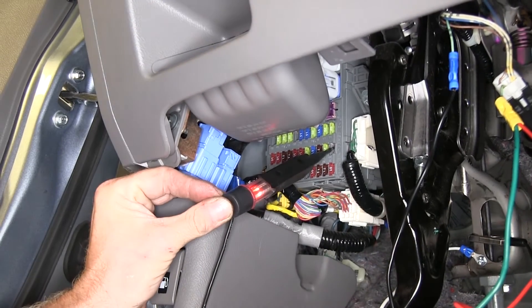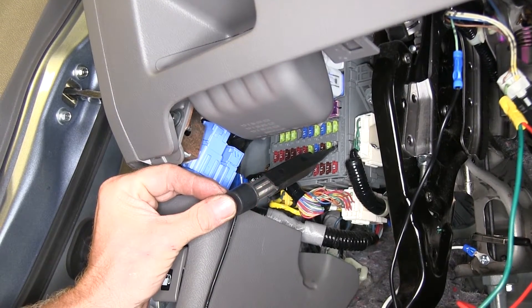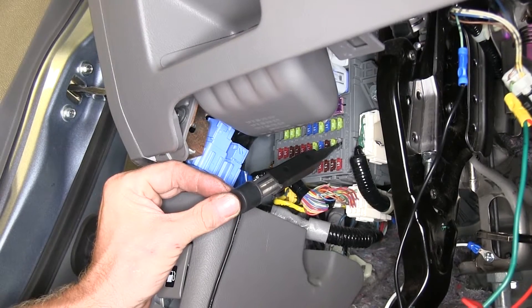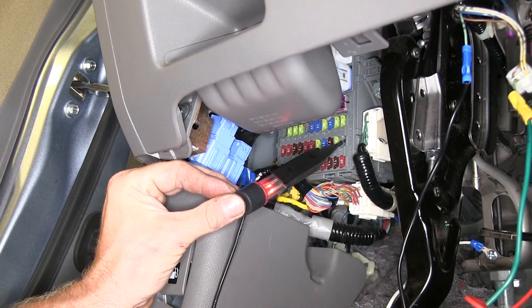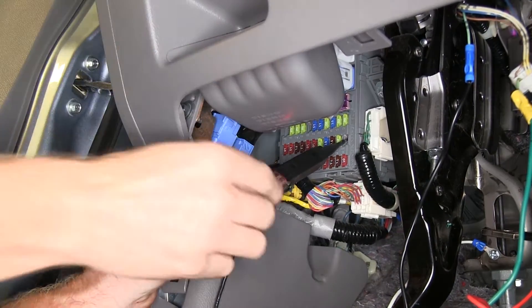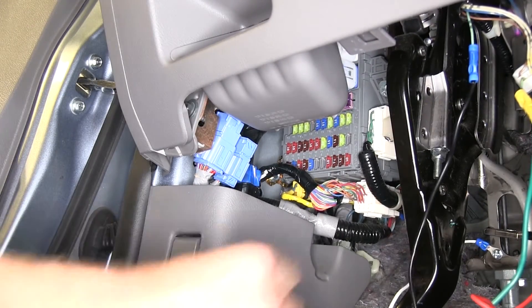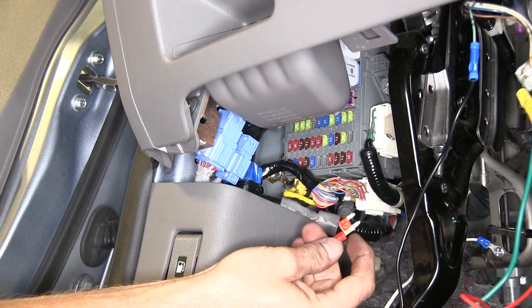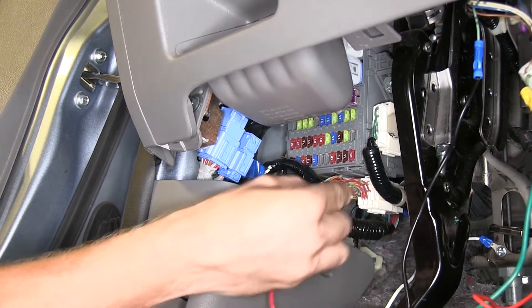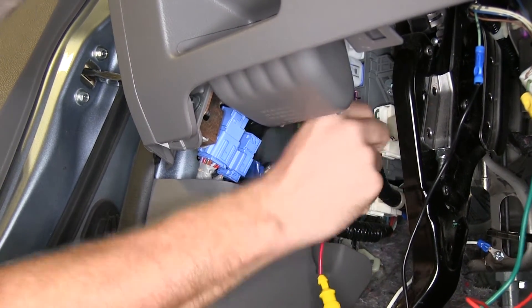We'll double check if we turn the key off and on a couple times. Key's off. Key's on the on position. So that's what we want. We'll take our fuse and our fuse tap and the side that's hot we want our fuse tap to go to. So let's go ahead and push it into place.